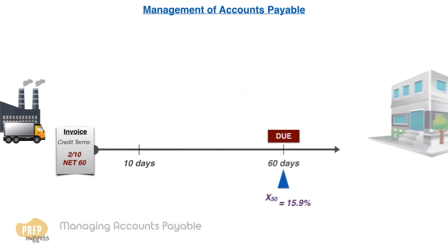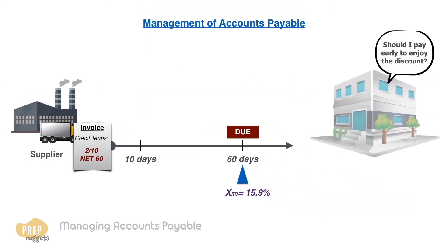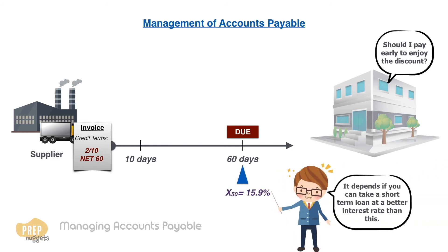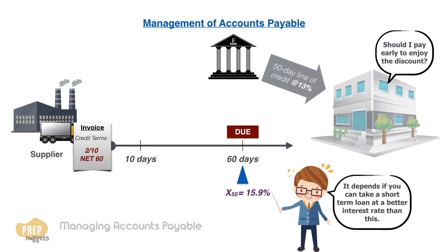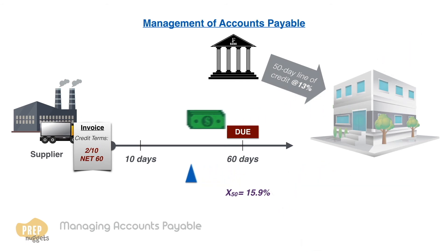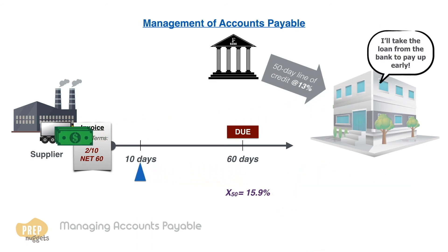So back to the question: should the company pay up early to enjoy the discount? The answer depends on the interest rate that the company can obtain a short-term loan for. If, for example, a bank offers a 50-day line of credit to the company at 13% interest, the company should take the bank loan and use the proceeds to pay the supplier on the 10th day. Otherwise, it should pay in full on the 60th day and finance the amount using trade credit.